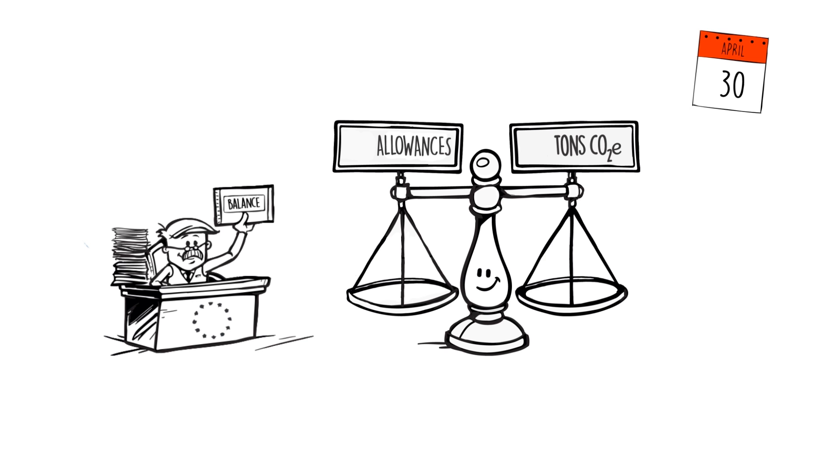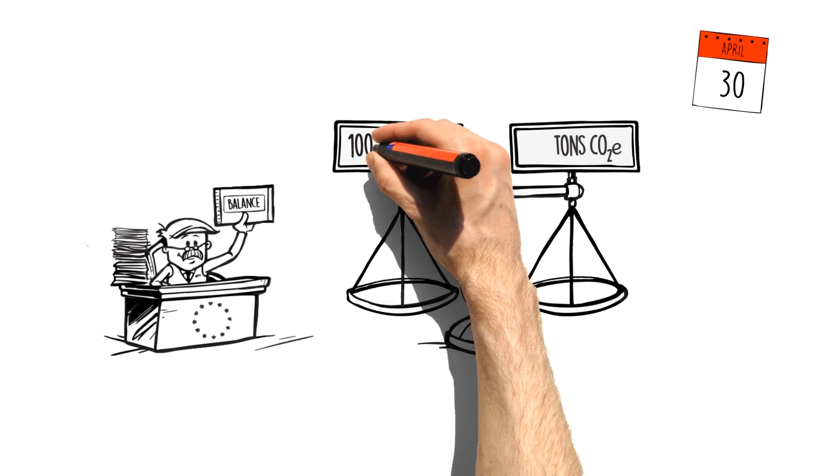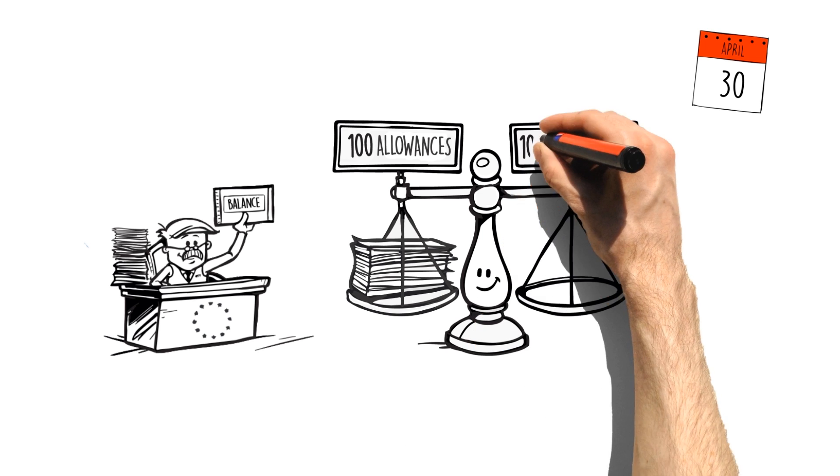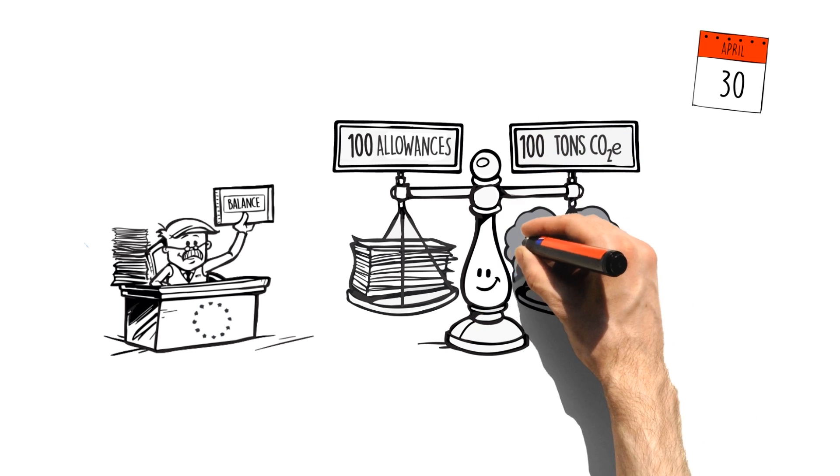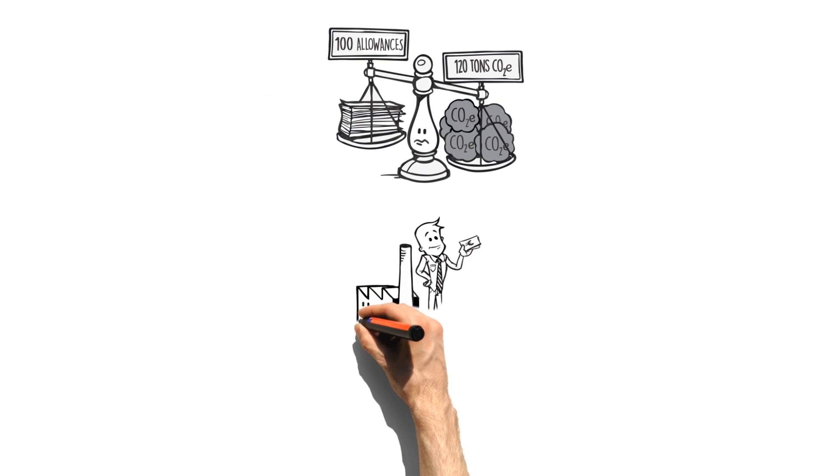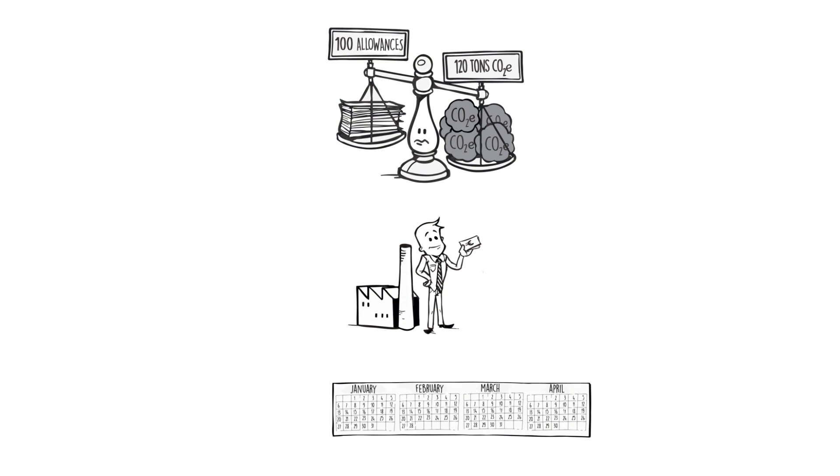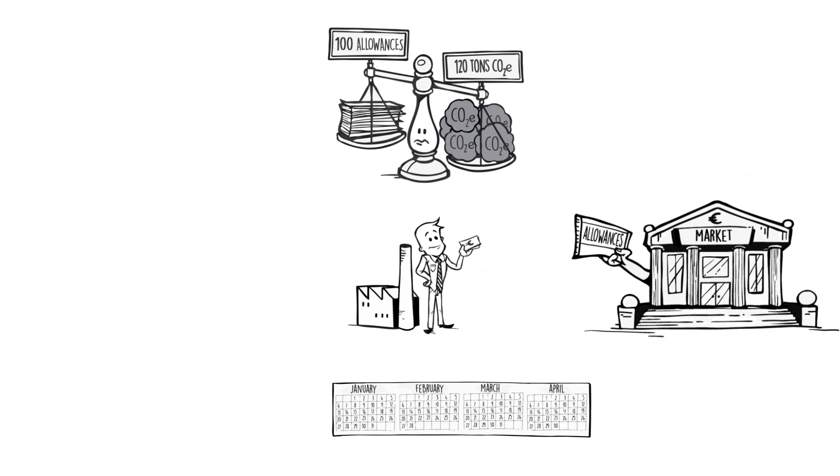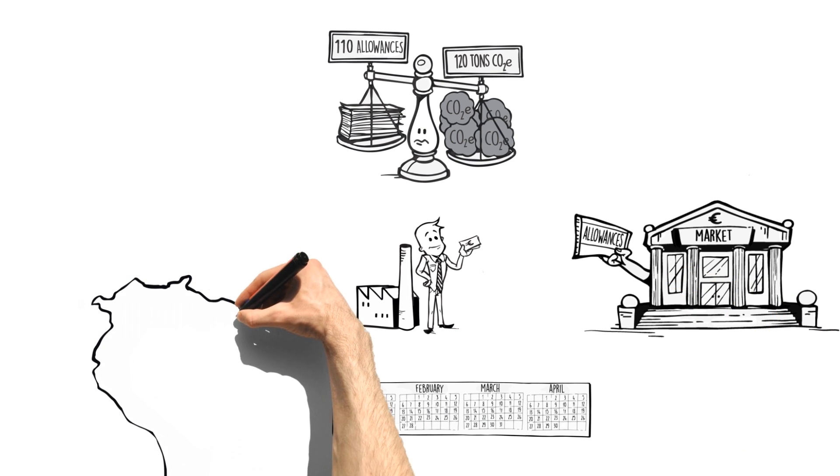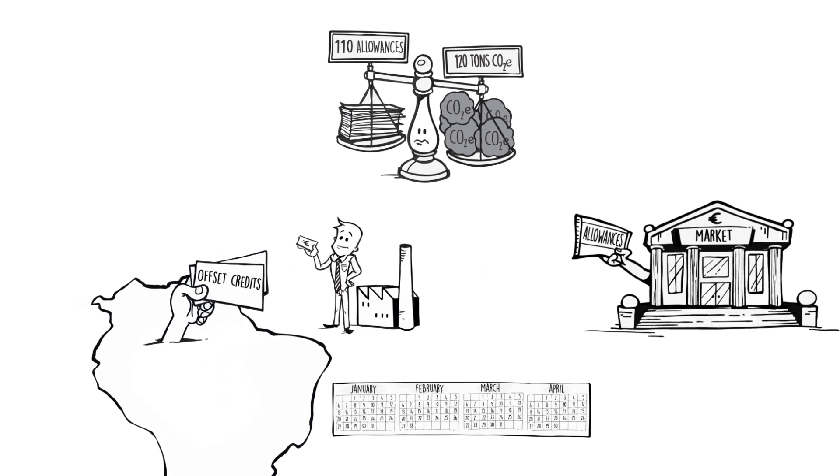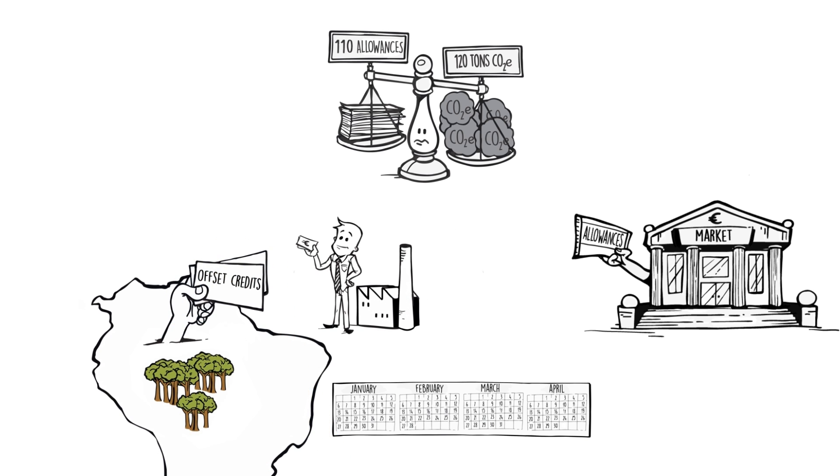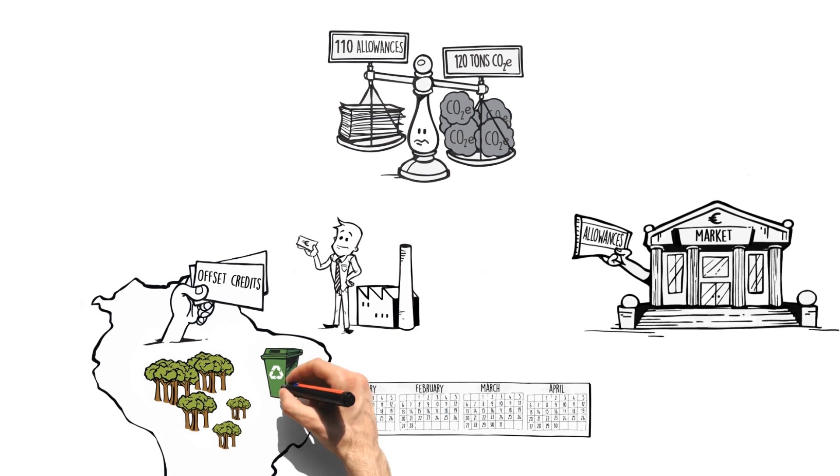For example, let's consider two companies which are issued 100 allowances each, corresponding to an emission volume of 100 tonnes of CO2 equivalent. If at the end of the year, company A has emitted 120 tonnes of CO2 equivalent, it will have four months to buy the excess allowances from the market or it may purchase offset credits. The latter represents emission reductions achieved by other geographic zones or in other sectors.